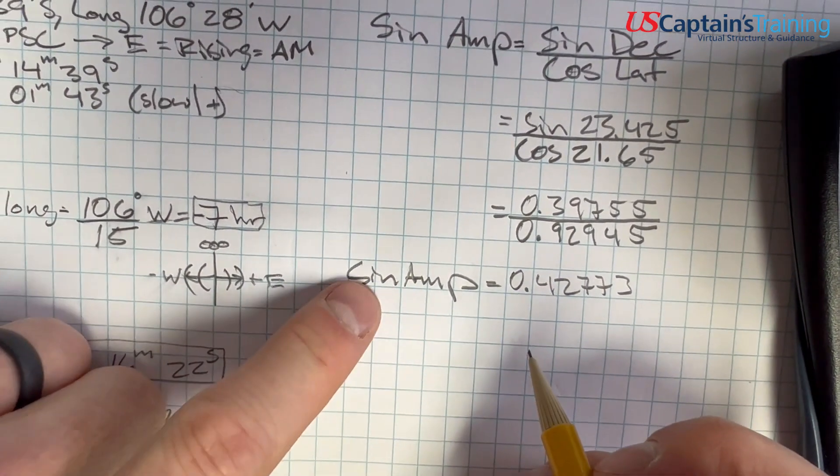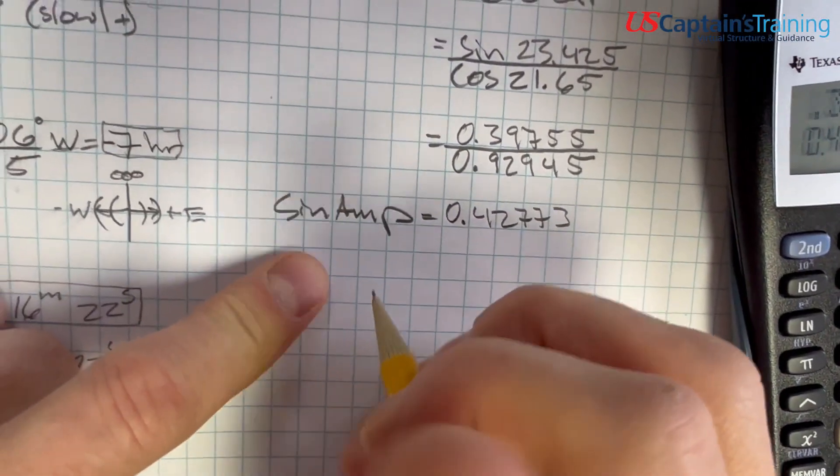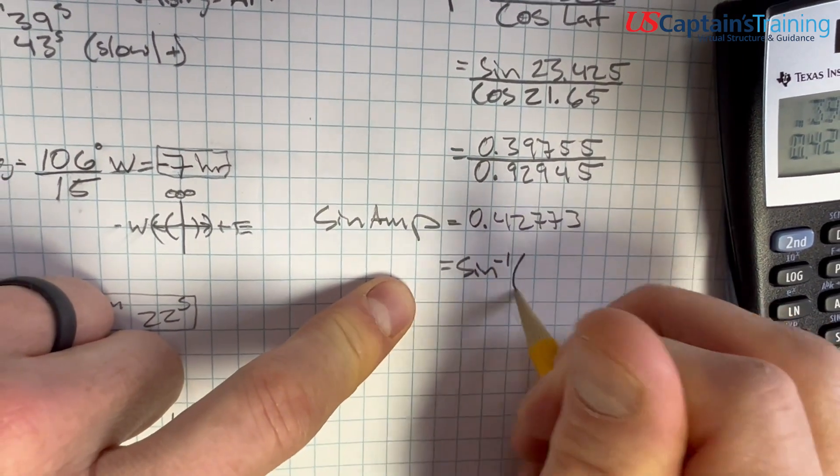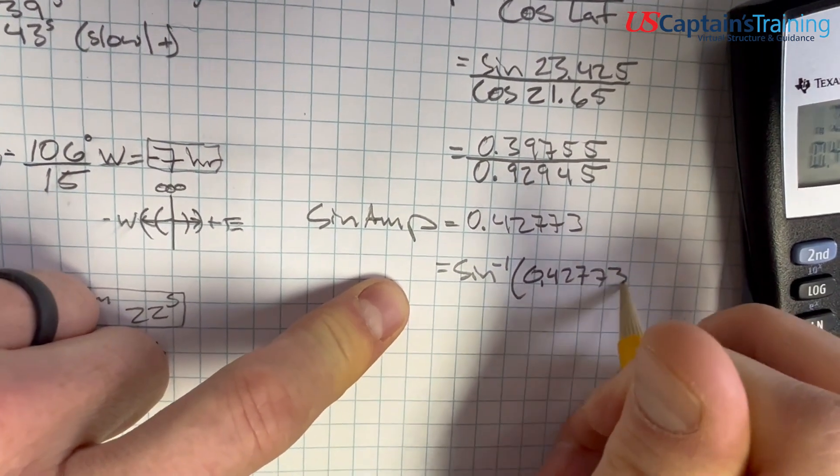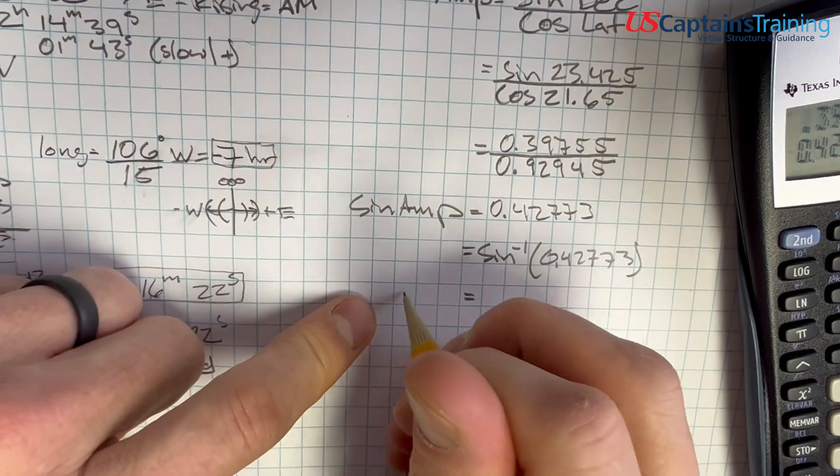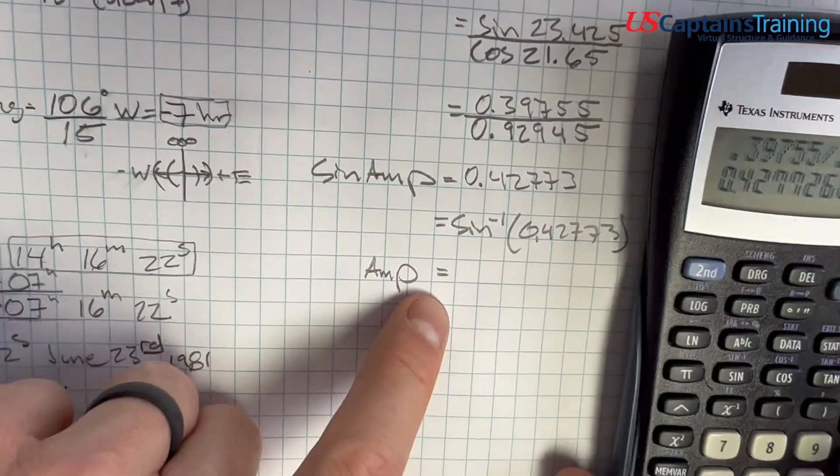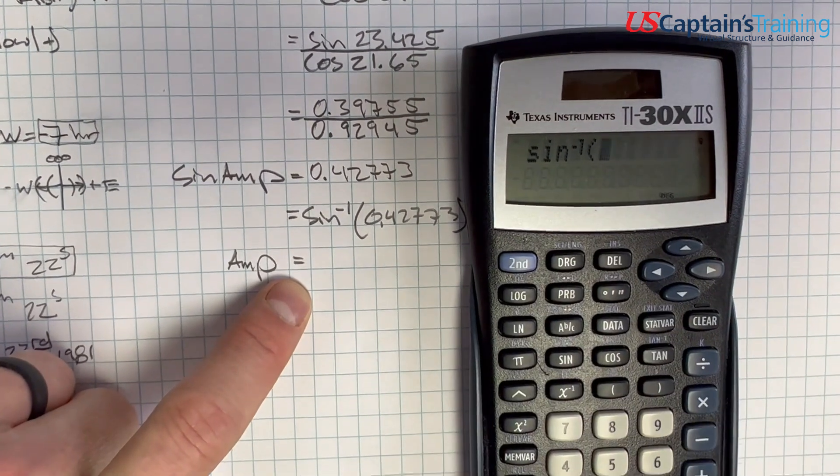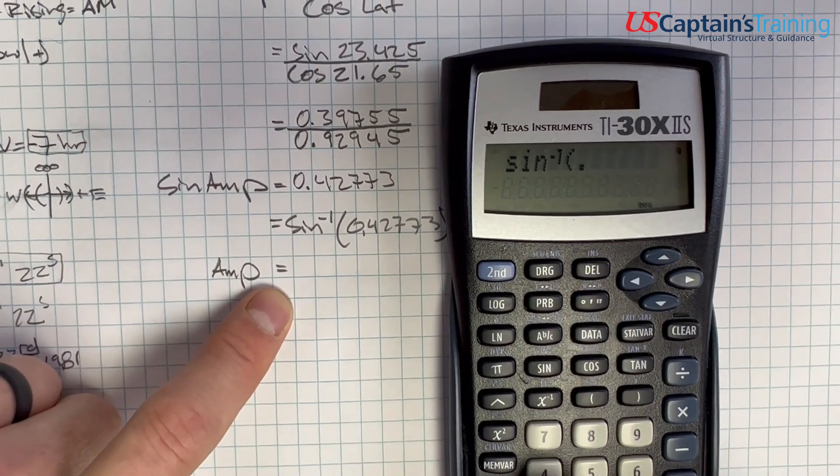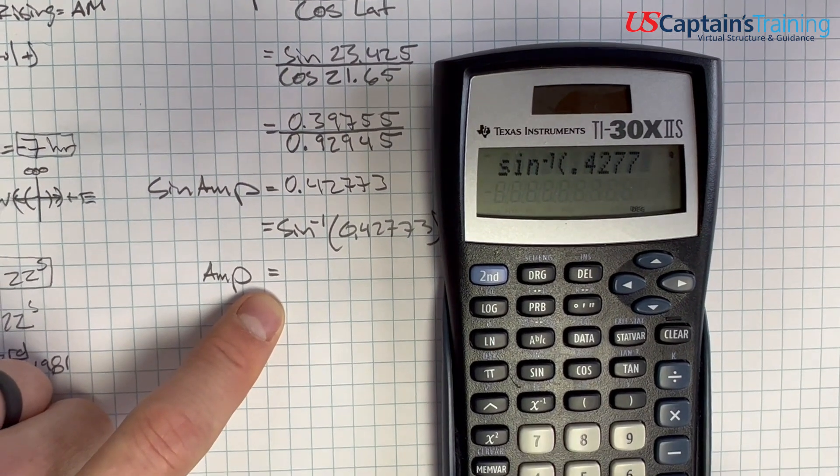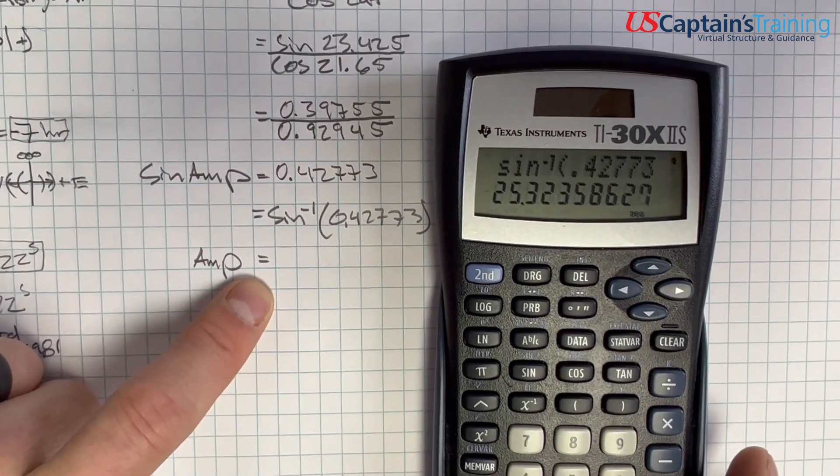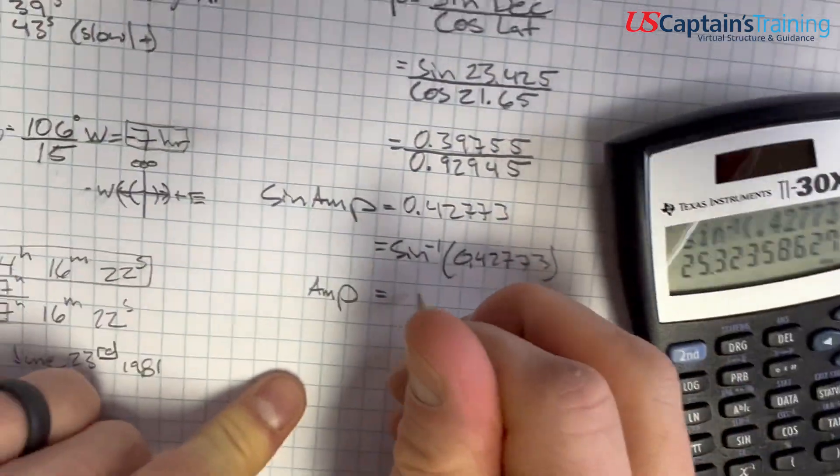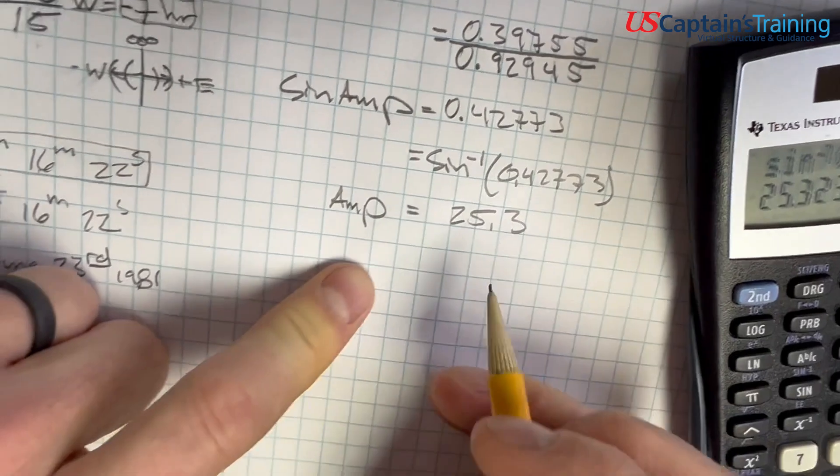Now to get this sine to the other side and just get amplitude, we take the inverse. So it ends up being sine inverse of 0.42773. And we put that in and that's going to give us our amplitude in quadrantal notation. Second sine to get the inverse, 0.42773 equals 25.3 degrees. We're just going to bring it down to this decimal: 25.3.